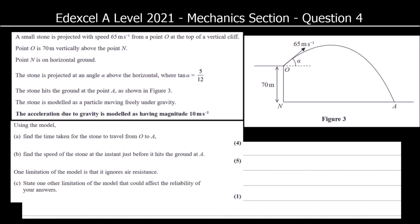A small stone is projected with speed 65 meters per second from a point O at the top of a vertical cliff. Point O is 70 meters above point N, and point N is on horizontal ground.